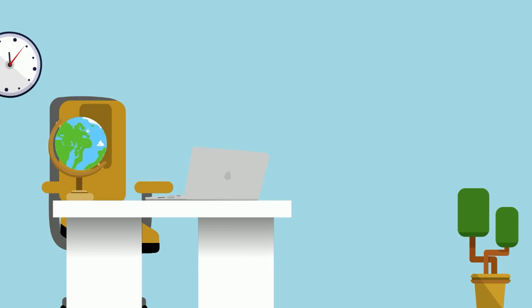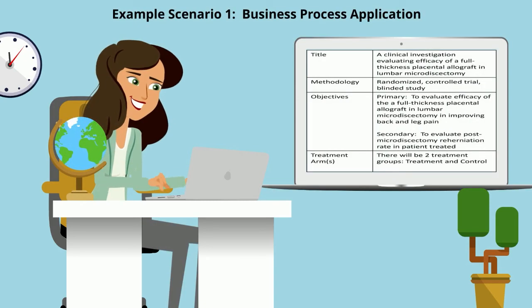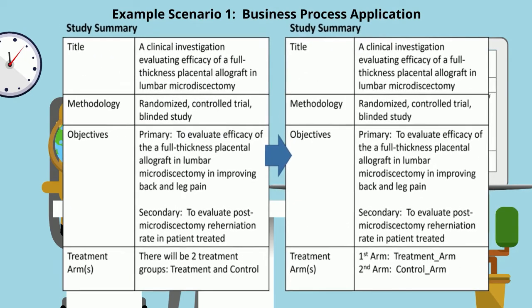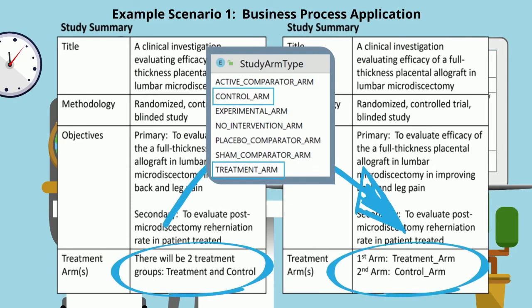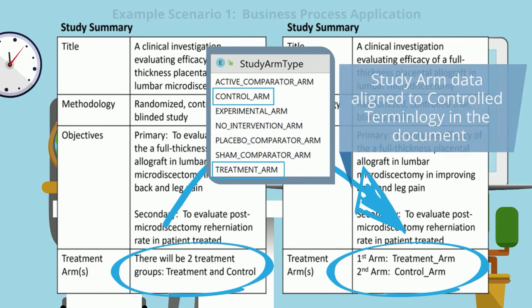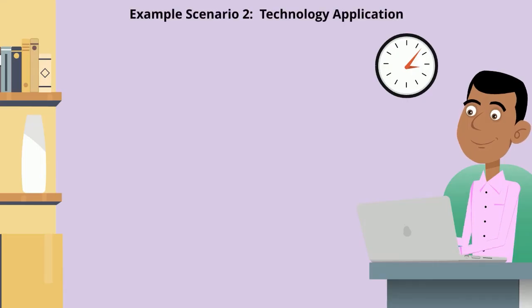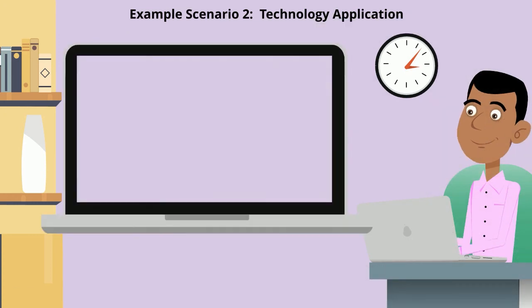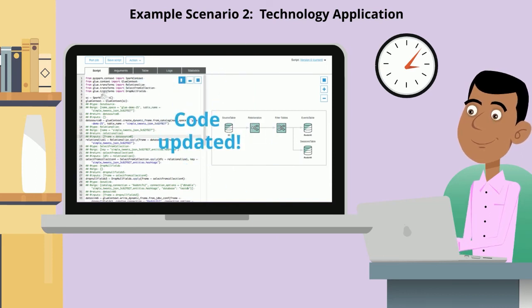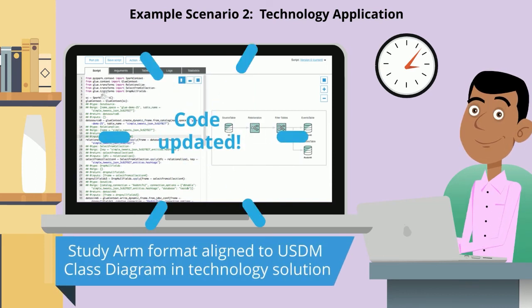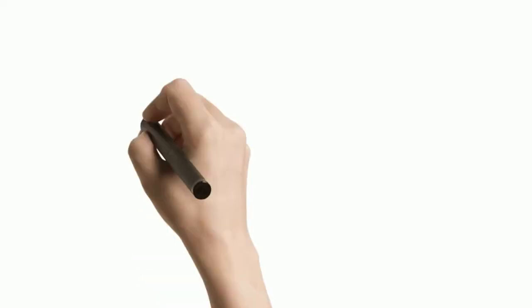How can the USDM study protocol standards and reference architecture be applied across different stakeholder groups? There are a number of scenarios, and here are two examples. First, a medical writer working in a copy-paste word authoring environment can start standardizing protocol terms according to the controlled terminologies to prepare for automation. Second, an IT developer at a sponsor or vendor solution company can start to align clinical database fields to the USDM class diagram.